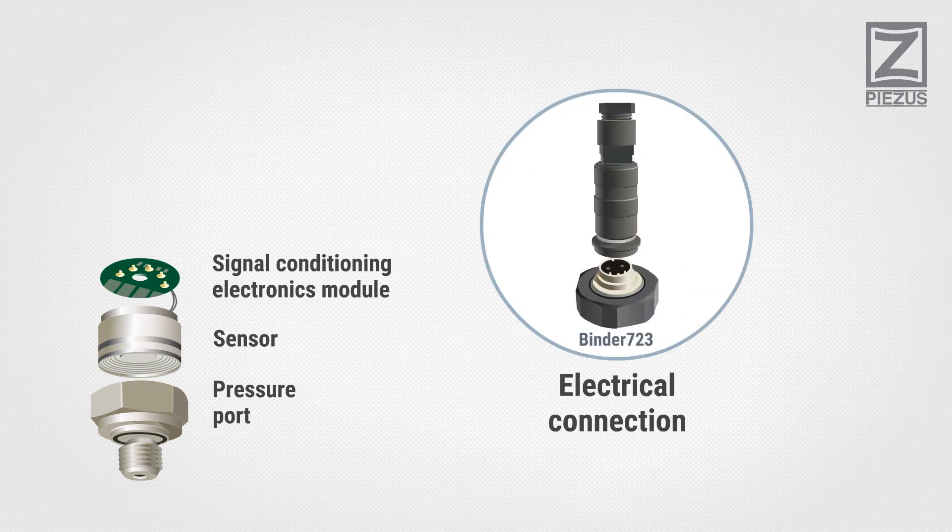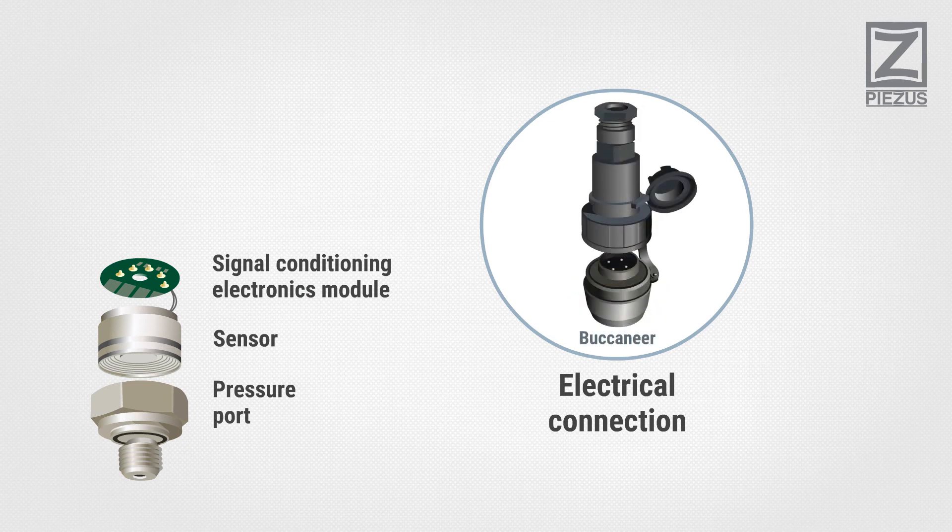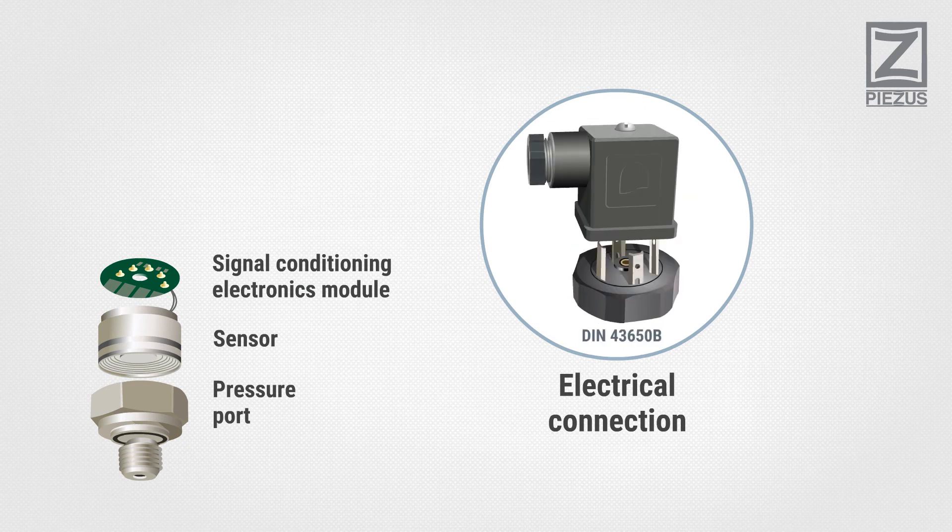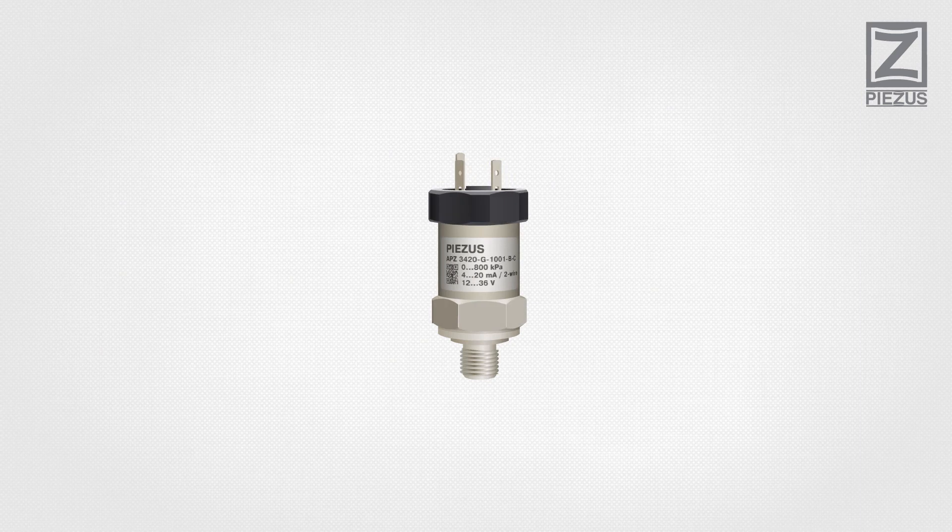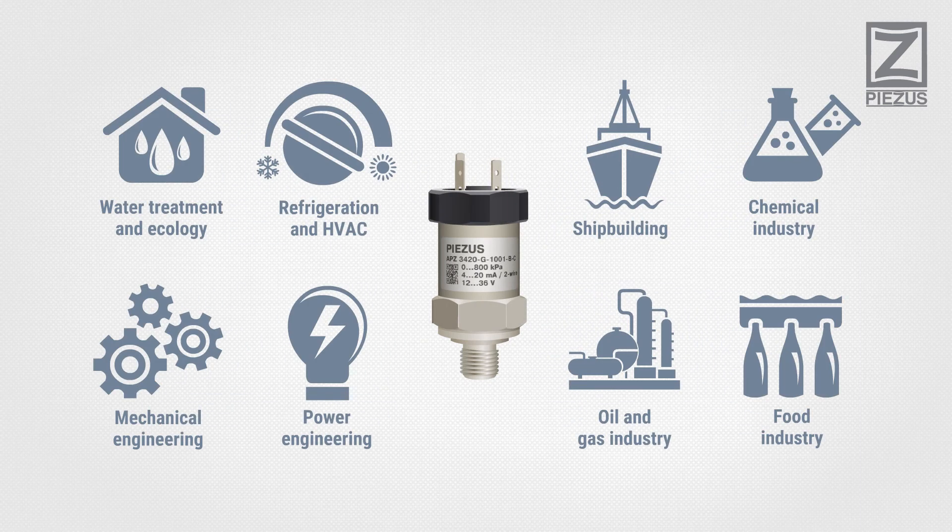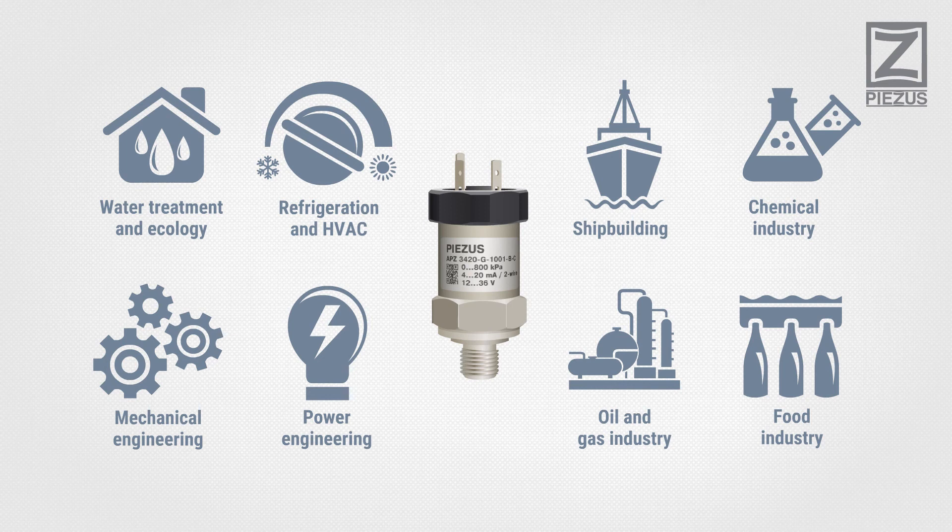Electrical connection is used to wire a pressure transmitter to a measuring system. A wide variety of ordering options allow configuring a pressure transmitter to be successfully used in various technological processes.